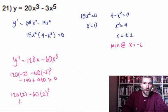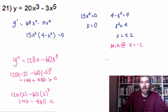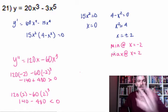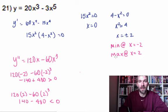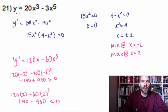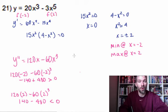Now looking at x equals positive 2: 120 times 2 minus 60 times 8 gives 240 minus 480, which is less than zero. So we get a maximum at x equals positive 2. If we want the exact y-values, we substitute these x-values back into the original function — evaluate f of negative 2 and f of positive 2 to get the y-coordinates for the min and max points.